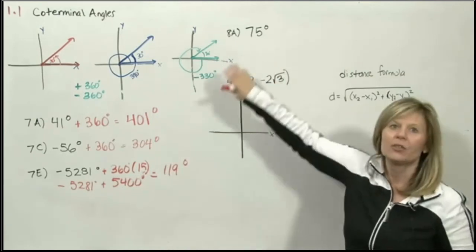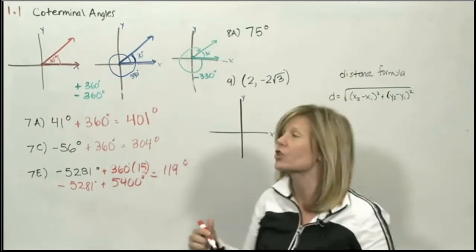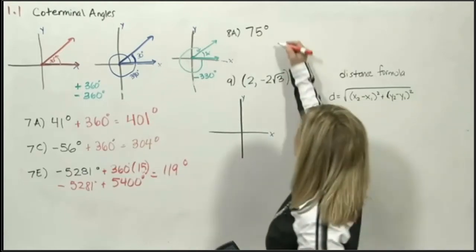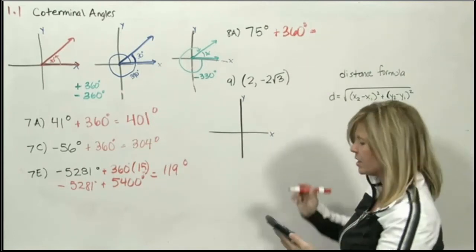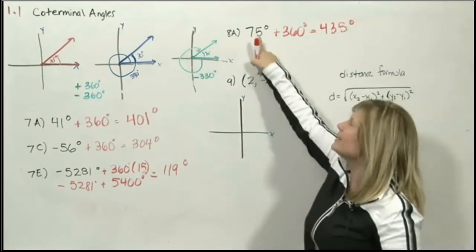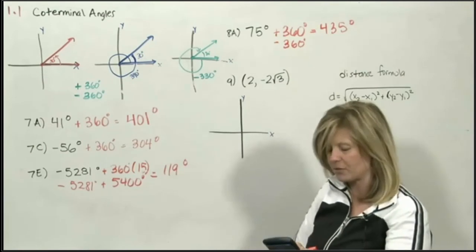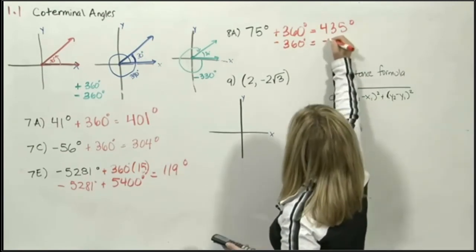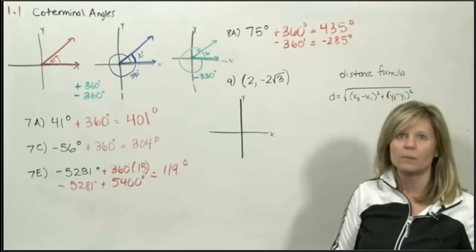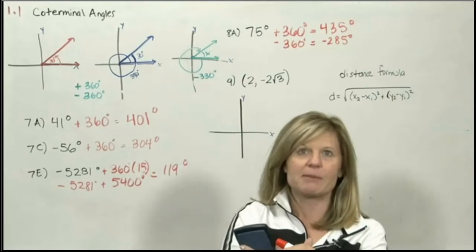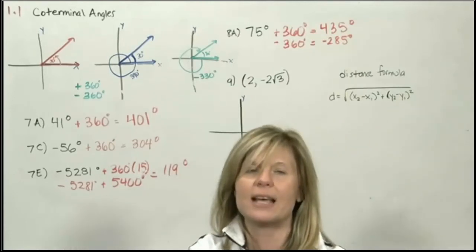Let's go to example 8A. The directions say give a positive and a negative coterminal angle — one of each. So if I start with 75 degrees, to get a coterminal angle that's positive I add 360, giving 435 degrees. To get a coterminal angle that is negative, I subtract 360 from 75, giving negative 285 degrees. So 75 degrees drawn in quadrant 1, another angle landing in the same spot is 435 degrees, and the negative angle is negative 285 degrees.